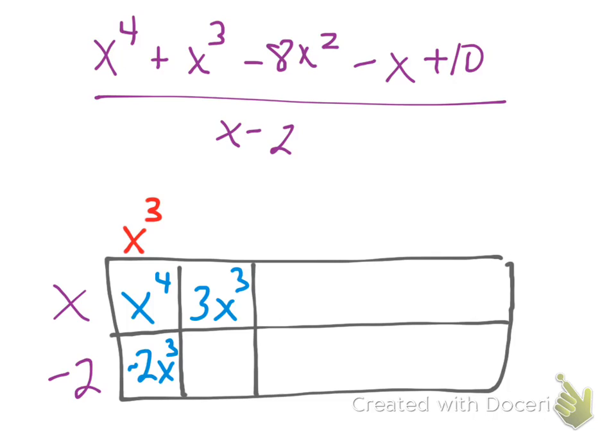Once again, I need to figure out the top. x times what gives me 3x cubed? It's going to be a positive 3x squared. That allows me to figure out my next box, which is now going to be a negative 6x squared.